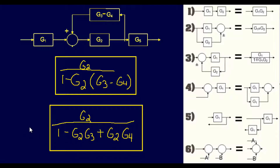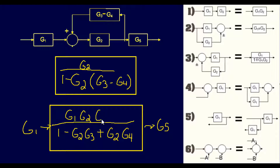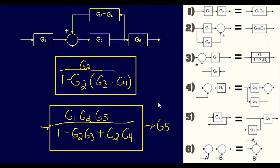Then we have G1 going in and then going to another block, G5. Looking at Rule 1, during a single flow pathway like this, you just multiply them together — so it would be G1 times G5. That's a pretty simple way of simplifying it down, and we get our final answer.